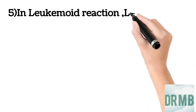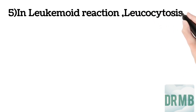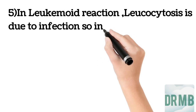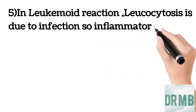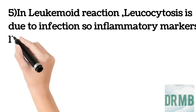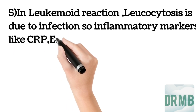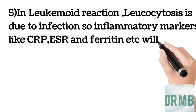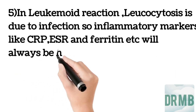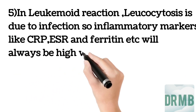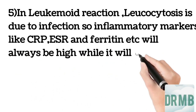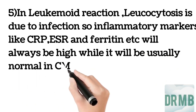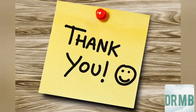Last but not the least, in leukemoid reaction leukocytosis is due to infection, so inflammatory markers like CRP, ESR, and ferritin will always be high. While these inflammatory markers are usually normal in chronic myeloid leukemia. This was all about today's lecture.